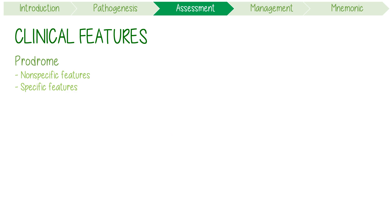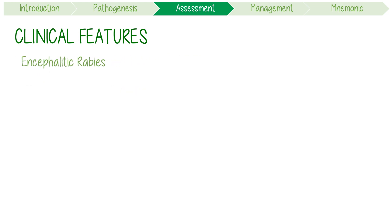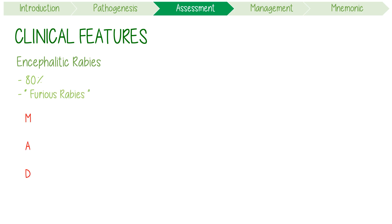After the prodrome, there are two major forms of the disease that might ensue: encephalitic rabies or paralytic rabies. Encephalitic rabies is more common at about 80%, and is also known as furious rabies because of its mad features.